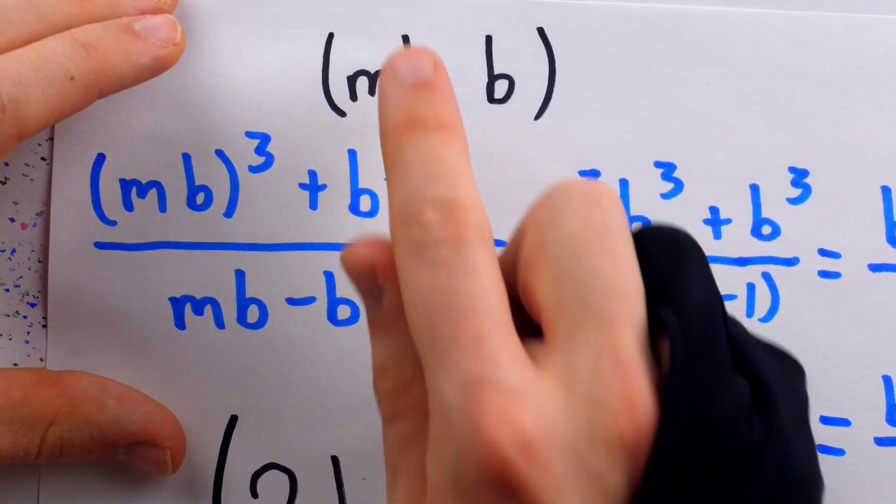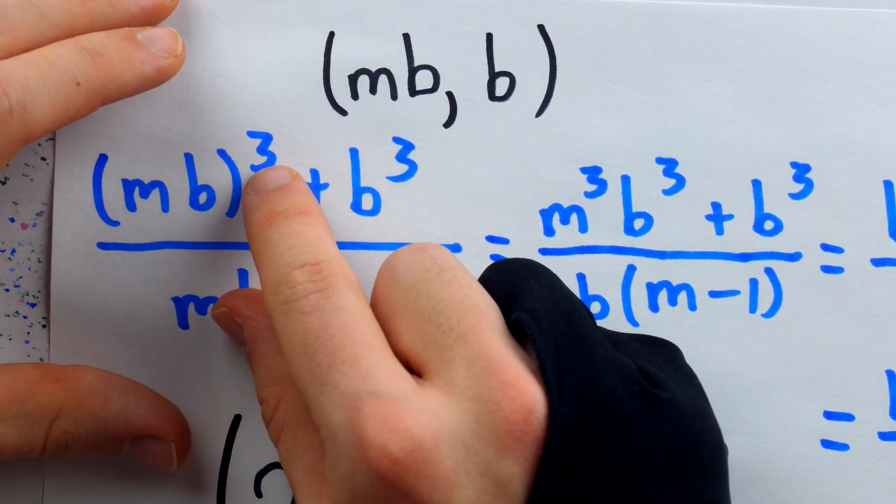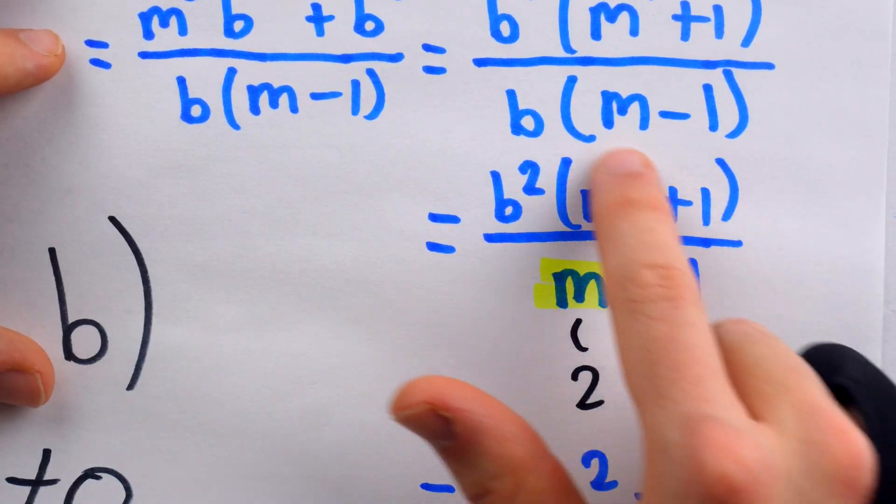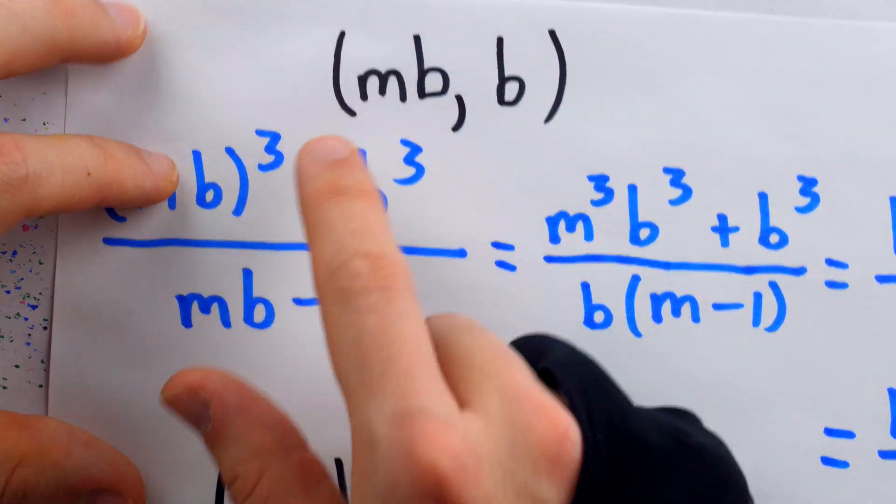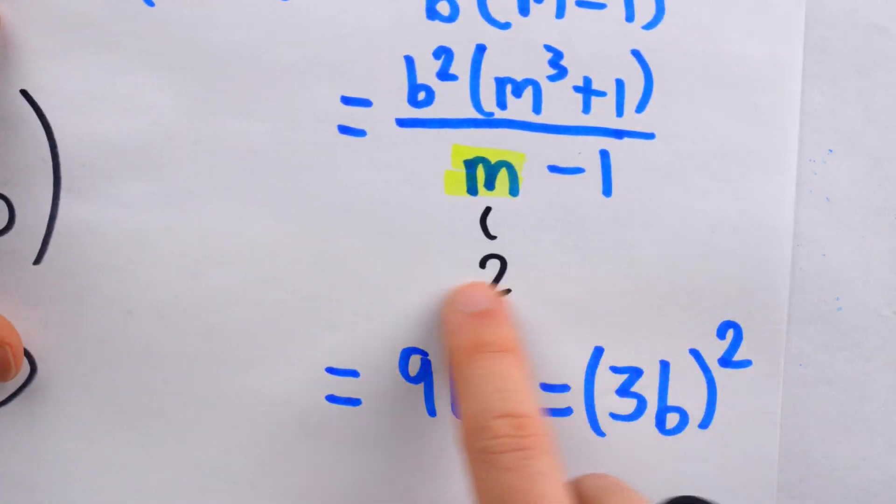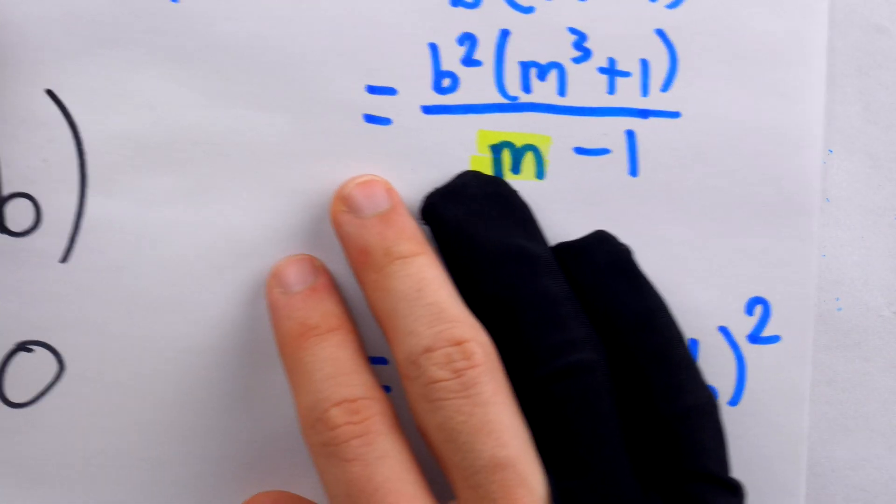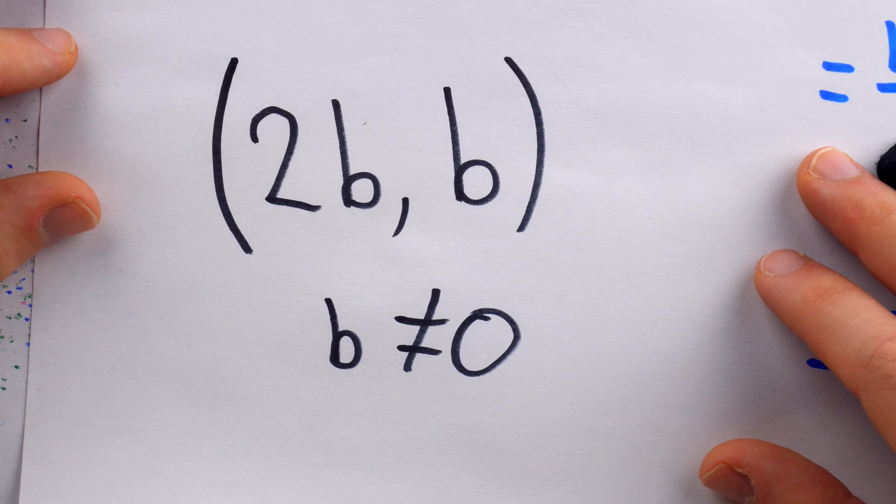Because as we saw, if a is a multiple of b and b is not equal to zero, we end up getting here, where it's clear that if the multiple, m, happened to be two, we would end up with a perfect square. And so there are infinitely many possibilities.